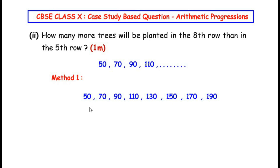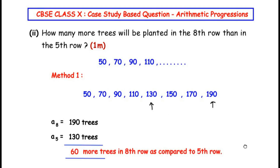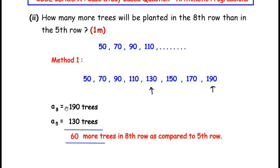Method 1: Extend the sequence up to the 8th row. Row 1: 50, Row 2: 70, Row 3: 90 ... Row 5: 130, Row 6: 150, Row 7: 170, Row 8: 190. The 5th row has 130 trees and the 8th row has 190 trees. Their difference is 190 − 130 = 60, so 60 more trees are planted in the 8th row.